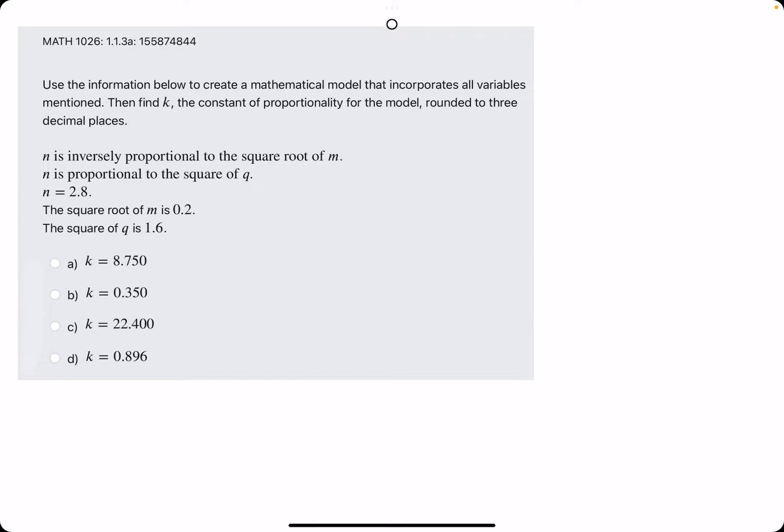So using the first two statements, we will set up an equation for the letter n. They say n is inversely proportional to the square root of m. So we want to start off with our k on top and m under the square root on the bottom. Since it's inversely proportional to the square root of m,